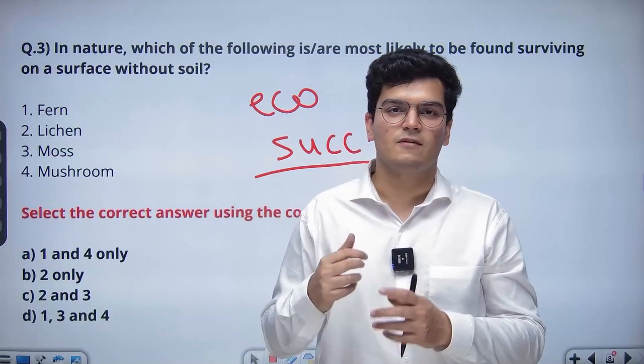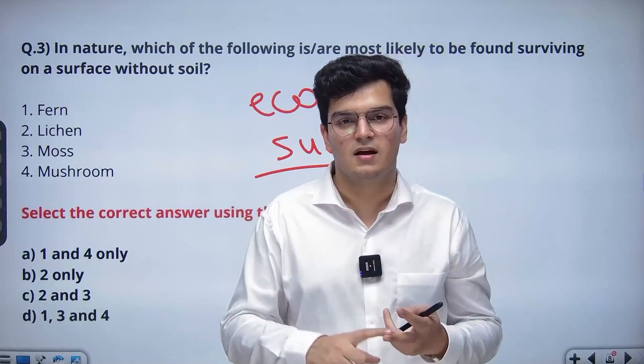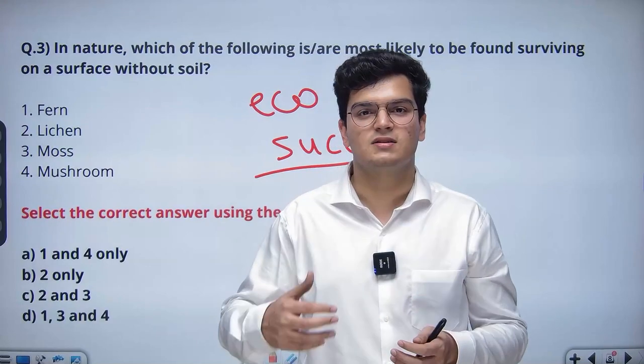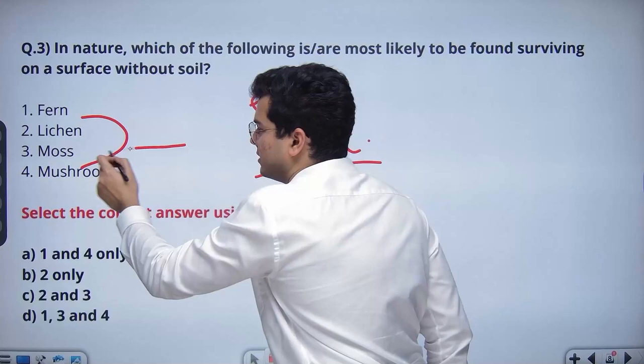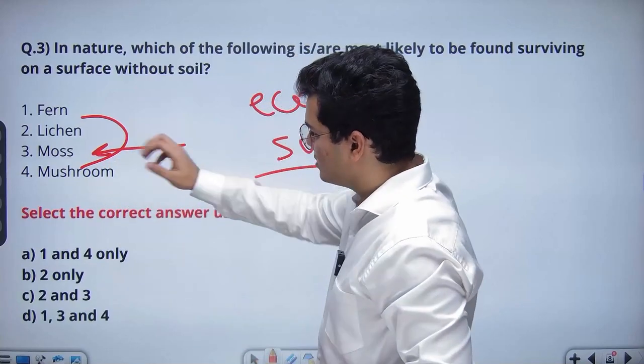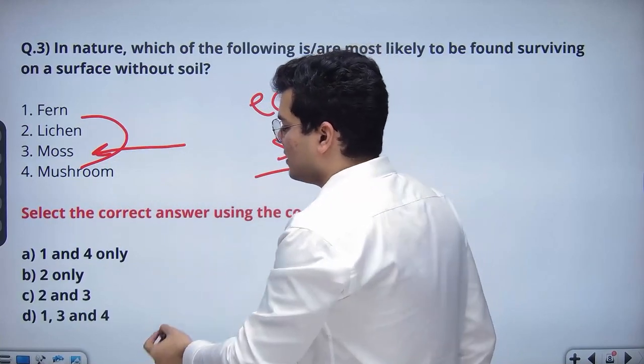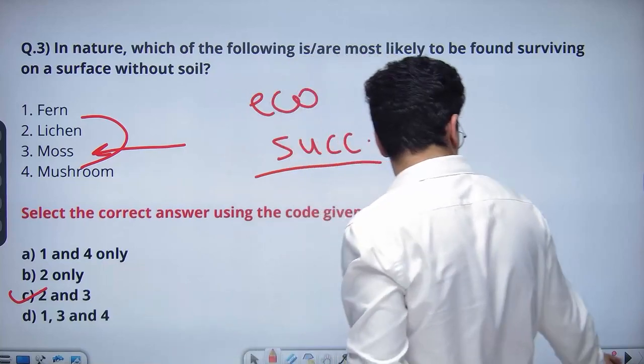The lesson here is that when you are reading concepts like niche, ecotone, edge effect, and ecological succession, read them in detail. You will realize that lichen and moss is the answer here. These are two species that take part in primary and secondary succession. The answer is 2 and 3.